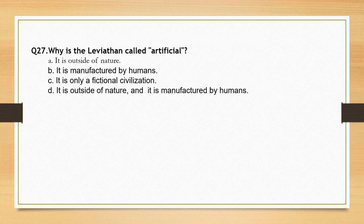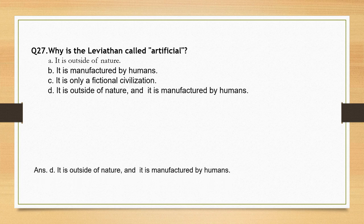Why is the Leviathan called artificial? Options: it is outside of nature; it is manufactured by humans; it is only a fictional civilization. The correct option is option D: it is outside of nature and it is manufactured by humans.